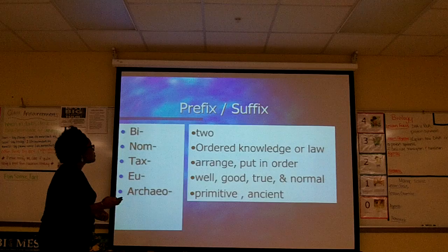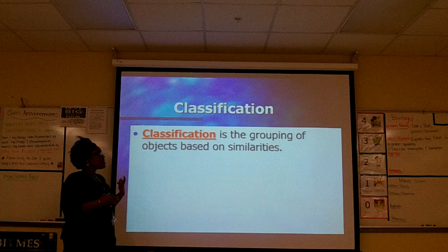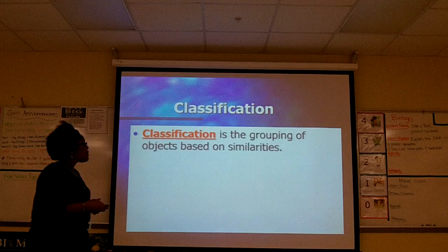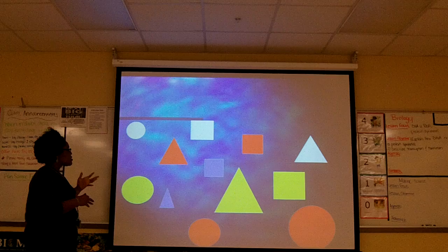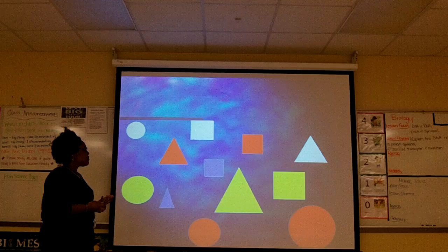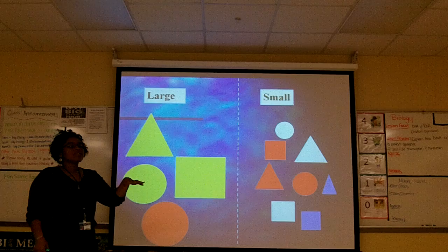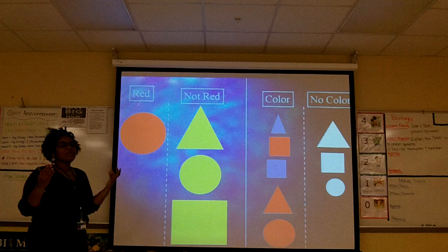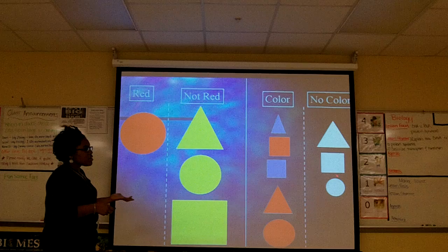Classification — if I had to give a definition, I'd say it's the grouping of objects based on similarities. For example, if I have a bunch of shapes — circles, triangles, squares — that are red, blue, white, or yellow, one way we can classify them is large shapes versus small shapes, or red versus not red, or color versus no color.